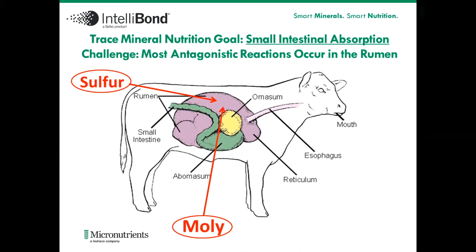The only exception to that would be cobalt, where we want cobalt to be dissolved and disassociated in the rumen for its benefits to the rumen. So we need to keep this in mind when we start talking about the sources and the potential differences of those sources with this goal in mind.